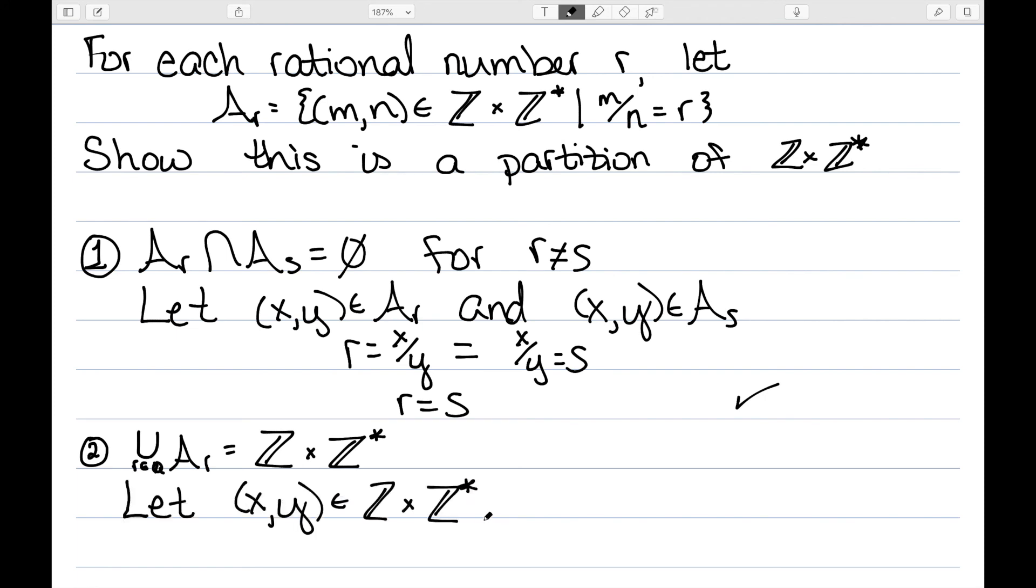Let's let (x, y) belong to Z × Z*. Then by definition of the rational numbers, I can form a rational number x/y, since y cannot be zero and these are just integers. Well, then we have that the (x, y) must belong to the set of Aᵣ. So the union would be all of Z × Z*.